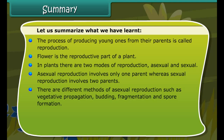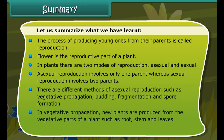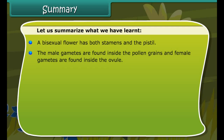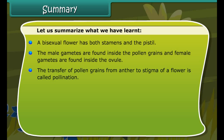Summary. The process of producing young ones from their parents is called reproduction. The flower is the reproductive part of a plant. In plants, there are two modes of reproduction: asexual and sexual. Asexual reproduction involves only one parent, whereas sexual reproduction involves two parents. There are different methods of asexual reproduction such as vegetative propagation, budding, fragmentation, and spore formation.